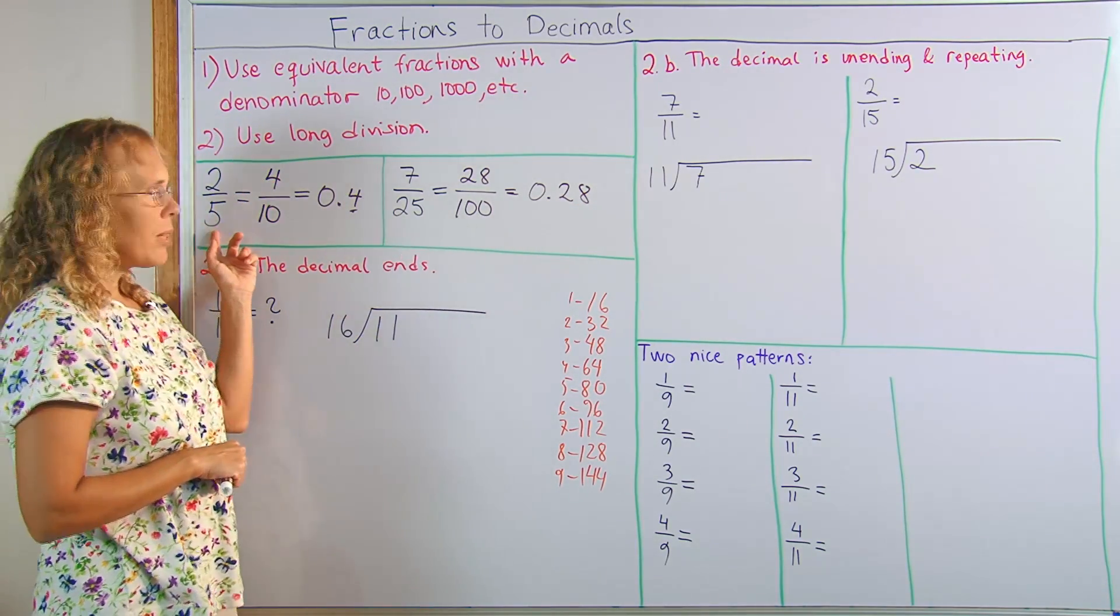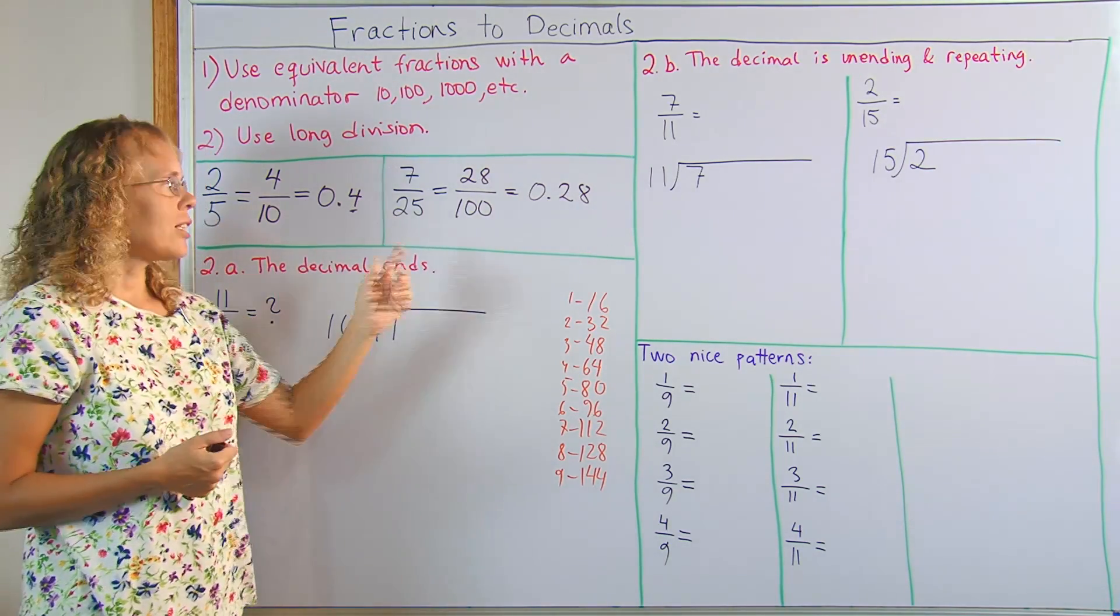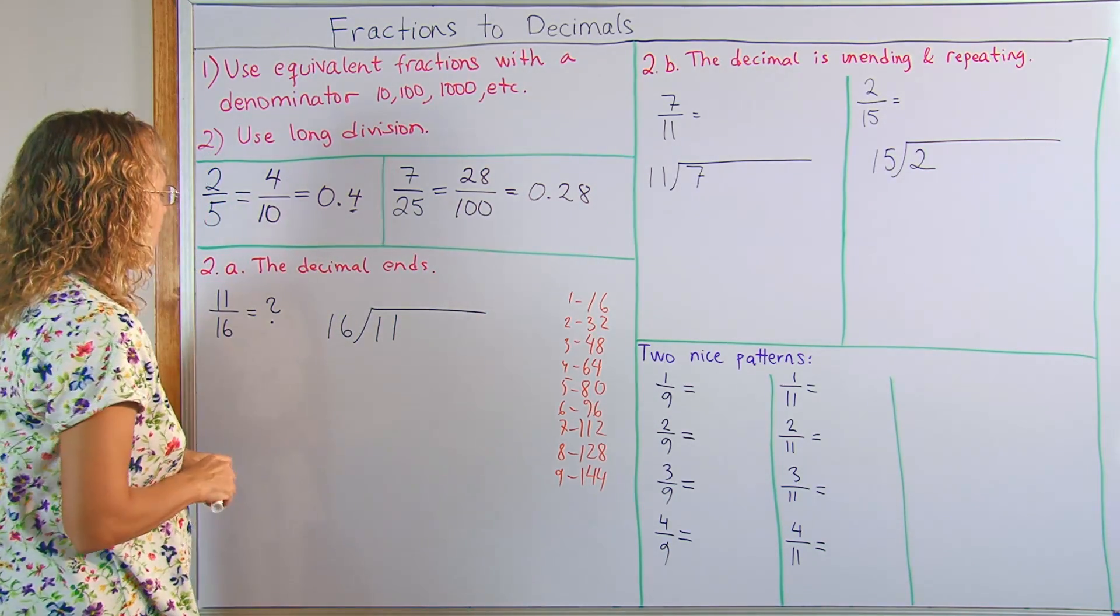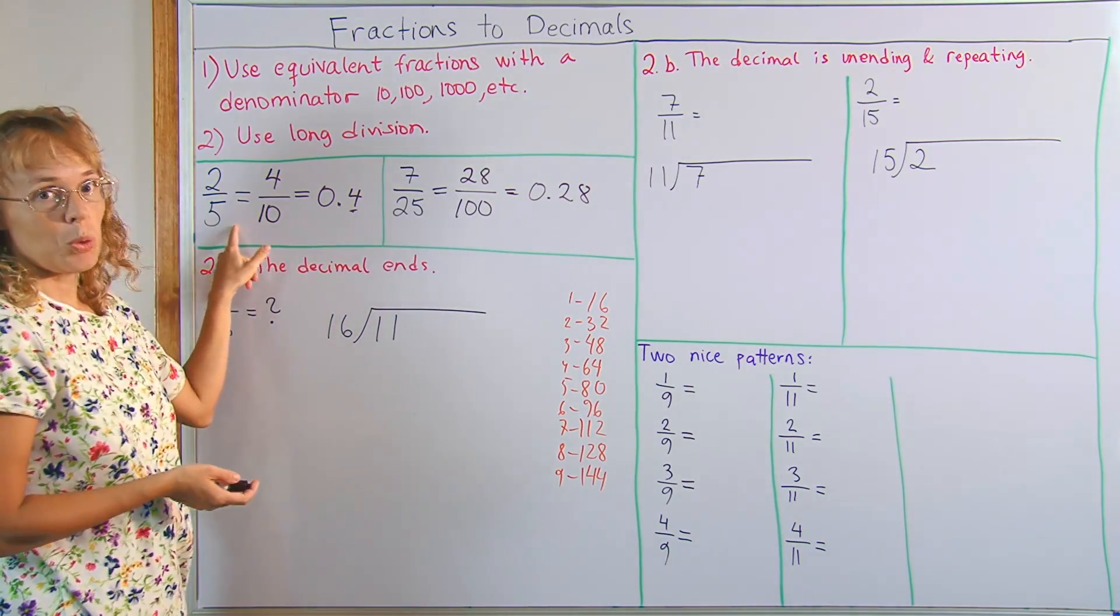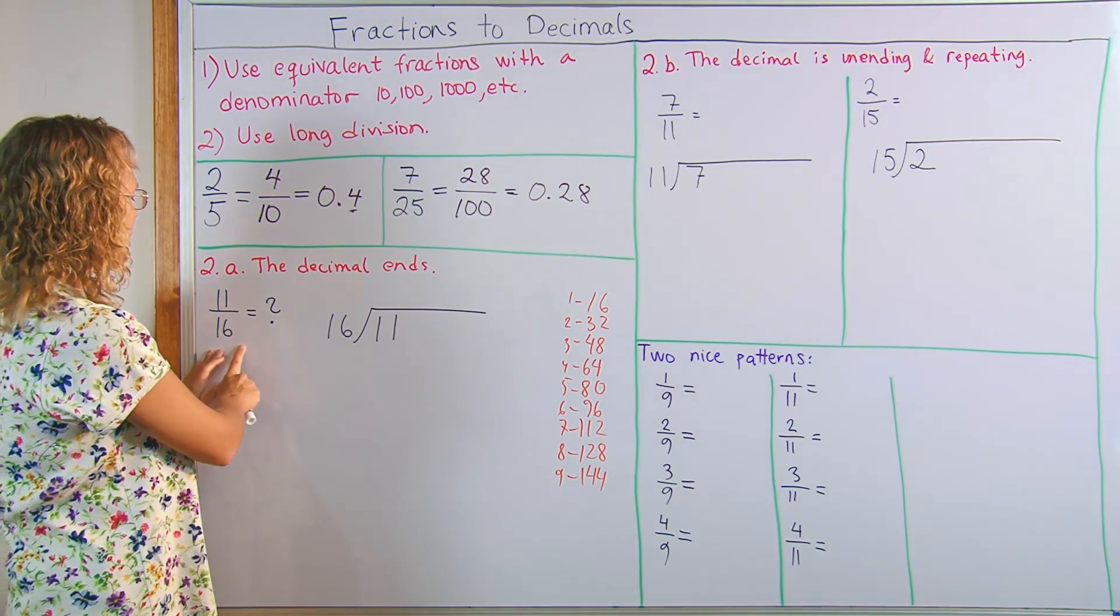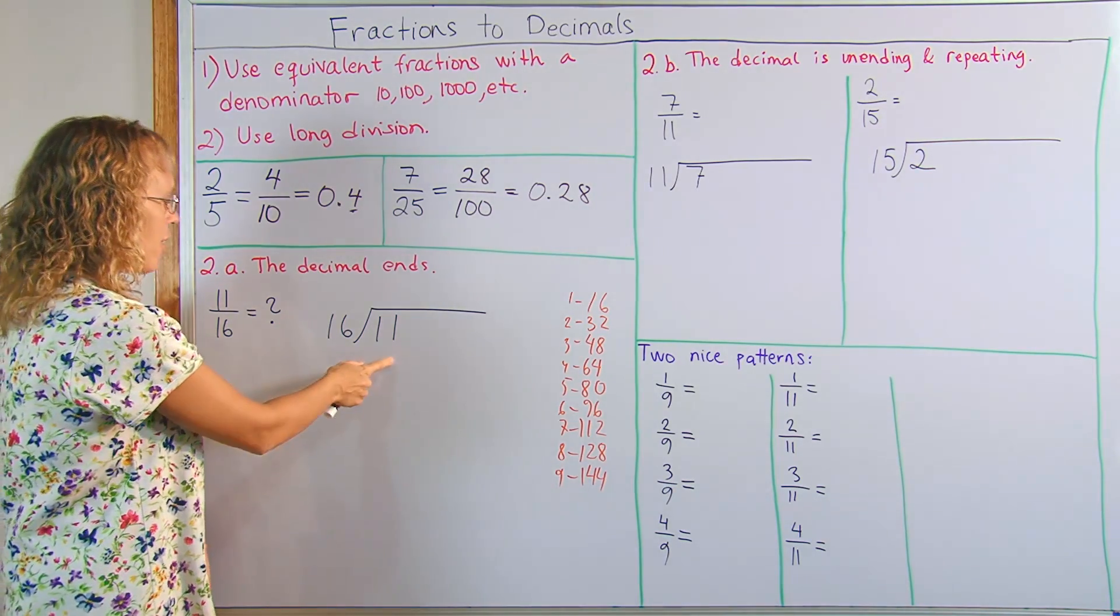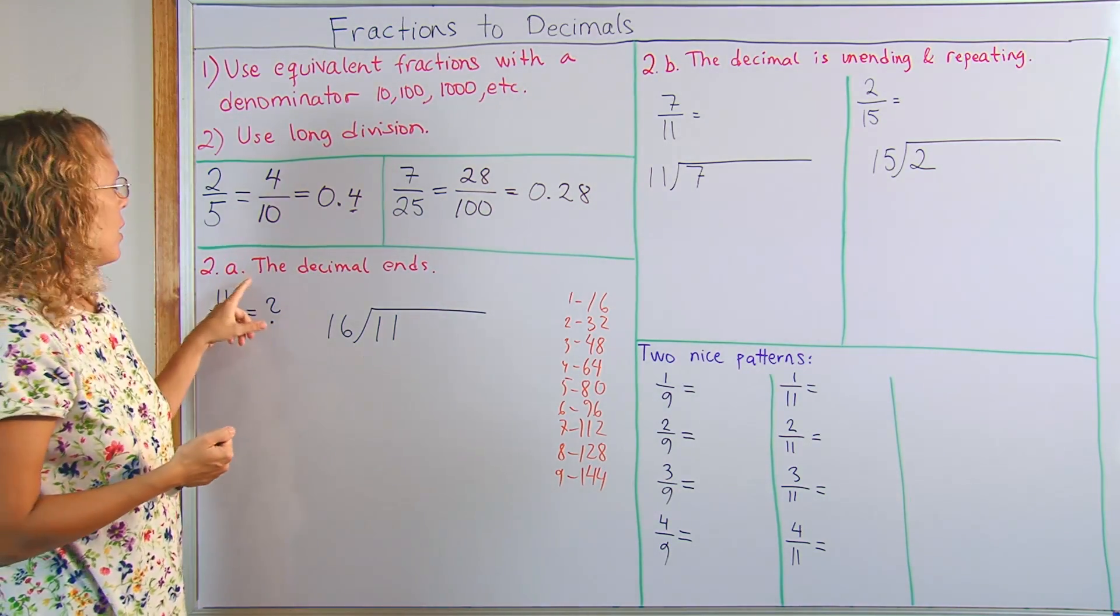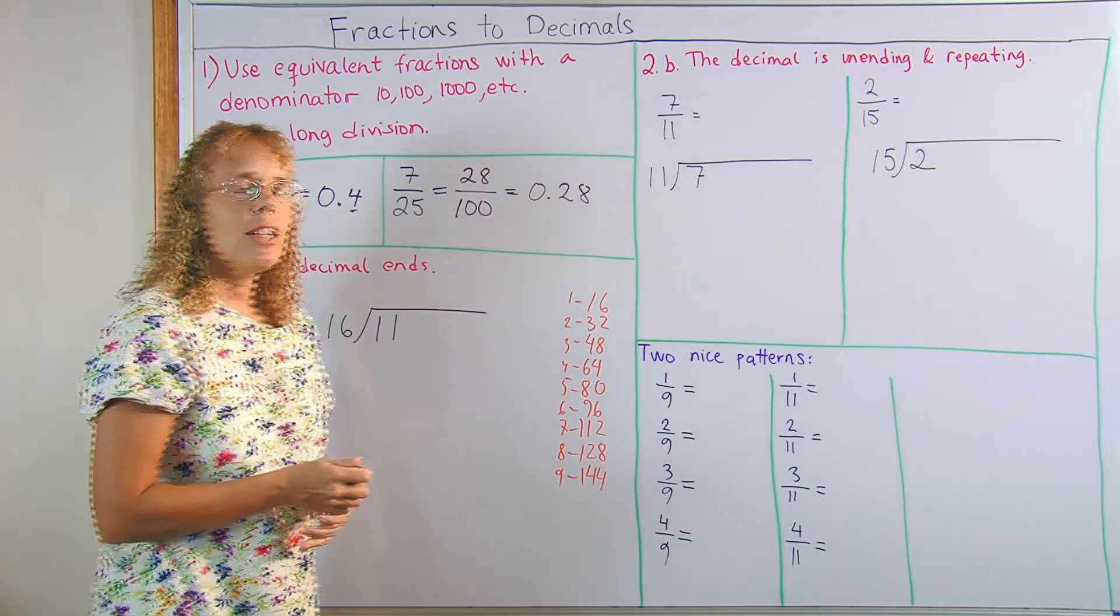Now, this method actually only works when your denominator here, its prime factorization only has twos and fives. But most students don't need to know that. And for most fractions we need to use division. And the division method works for these fractions too. So this method always works. If we want to have 11 sixteenths as a decimal, we use long division or a calculator and we divide 11 divided by 16. And there's two cases here in this method two. The first case is the decimal ends and the second case is the decimal does not end. So let's look at both.